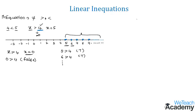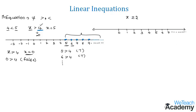Now let us represent the inequation x ≥ 2 on a number line. Let us draw a number line and mark the values greater than 2: 3, 4, 5, 6, 7, and so on. Since it is x greater than or equal to 2, the solution set also includes the number 2. Therefore, the solution set for x ≥ 2 includes 2 and all numbers greater than 2.